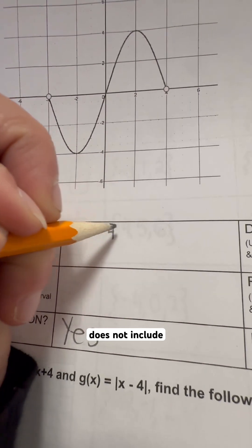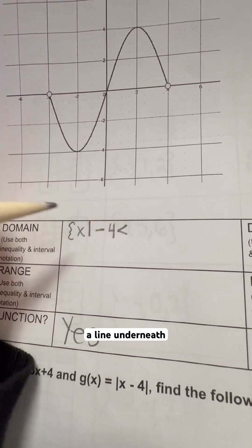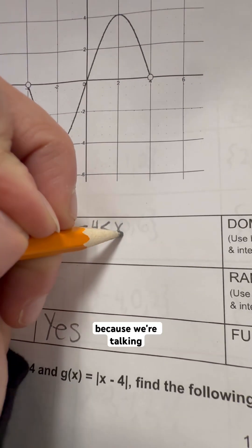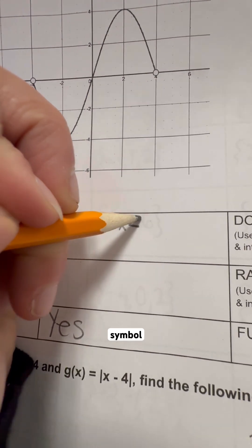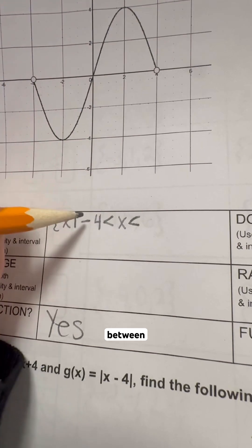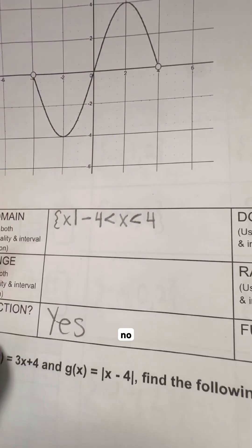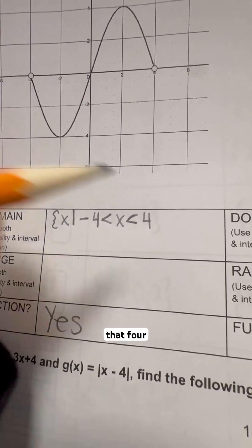And it does not include that. So when we do the inequality symbol, we are not going to put a line underneath it. X, because we're talking about domain, and then another inequality symbol. So if x is anywhere between negative four and positive four, no line underneath that because it's not including that four either.